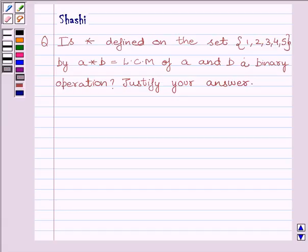The question is: Is star defined on the set {1, 2, 3, 4, 5} by A star B equals LCM of A and B a binary operation? Justify your answer.